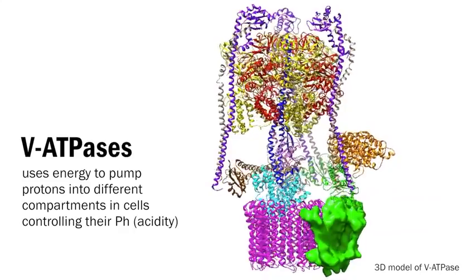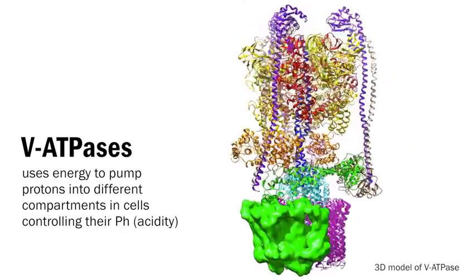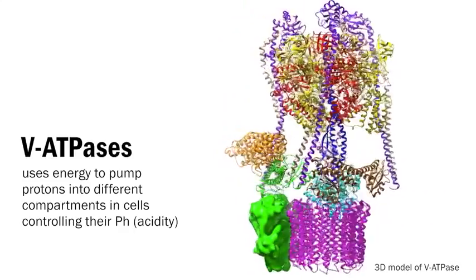The V-ATPase is effectively a proton pump. It uses energy to pump protons into different compartments in cells, controlling their pH. If this process doesn't work well, a lot of what has to happen in a cell doesn't work properly.